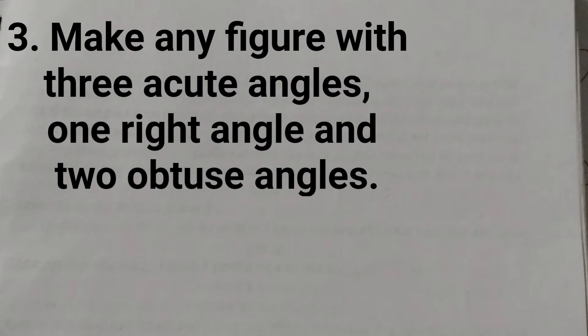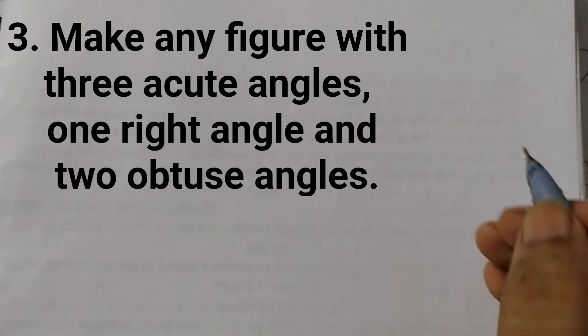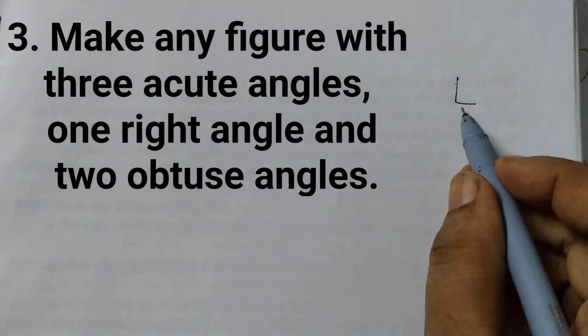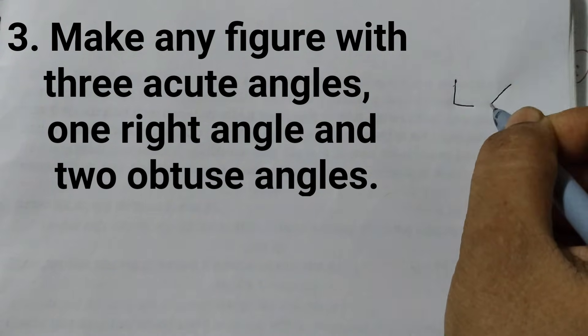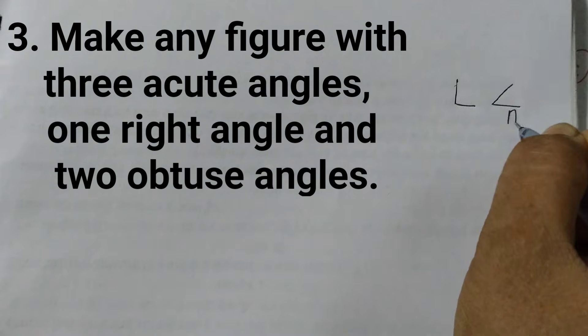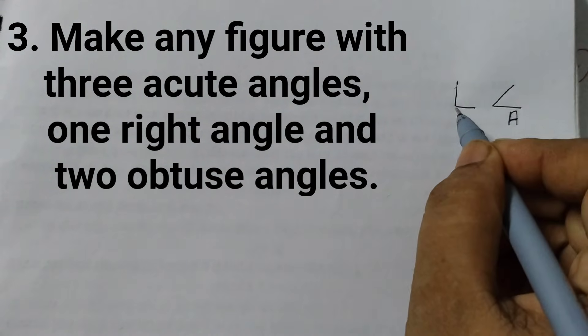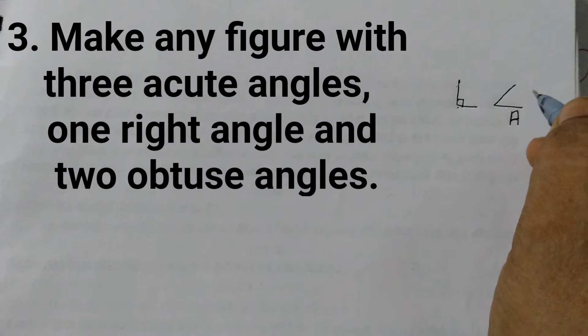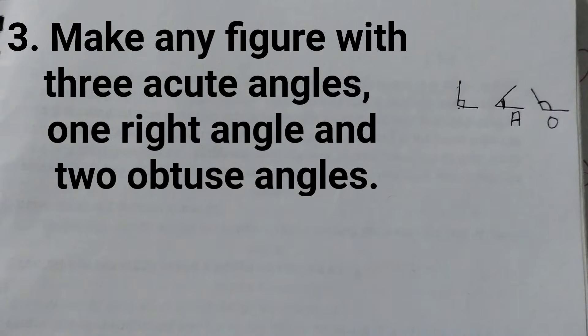So you must know what are acute angles, right angle and obtuse angle. So right angle is like this, like an L shaped angle. This is right angle. Less than this, that is less than 90 degrees would be acute angle. So this is acute angle and more than this, that means more than 90 degrees would be obtuse angle. So obtuse angle is somewhat like this. This is obtuse angle, this is acute angle.